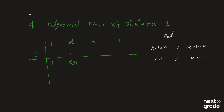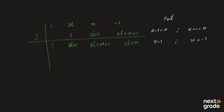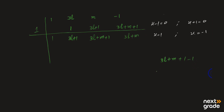3L plus 1 को again 1 से multiply करेंगे तो 3L plus 1 आएगा. इनको add करेंगे तो 3L plus M plus 1 आएगा. Again इसको 1 से multiply करेंगे — 3L plus M plus 1. इसको minus 1 के साथ add करेंगे: 3L plus M plus 1 minus 1, तो 1 और minus 1 cancel होंगे, बचेगा 3L plus M.